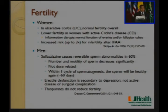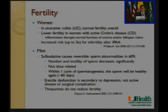Women with ulcerative colitis have overall normal fertility. There tends to be lower fertility in women with active Crohn's disease — particularly those with ileal or perianal Crohn's — largely because inflammation disrupts the normal function of the ovaries and fallopian tubes, which are adjacent to other pelvic organs.